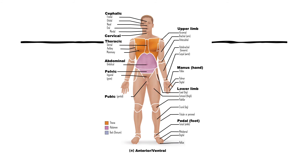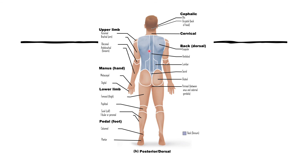The pubic area is where the genitals are found. Moving to the posterior or dorsal side: under the cephalic region, we have the otic area — for example, otic drops go in the ears, not the eyes. The occipital term refers to the back of the head, named after the occipital bone located at the posterior portion of the skull.